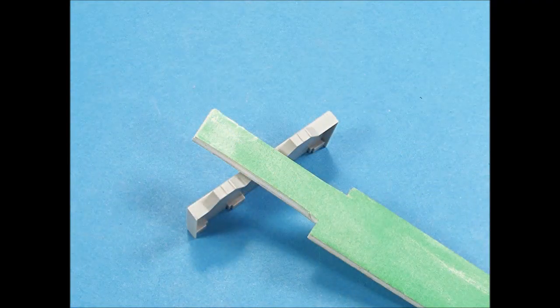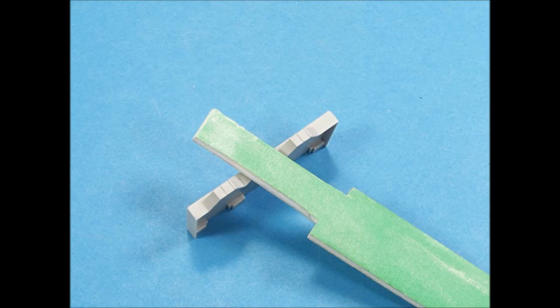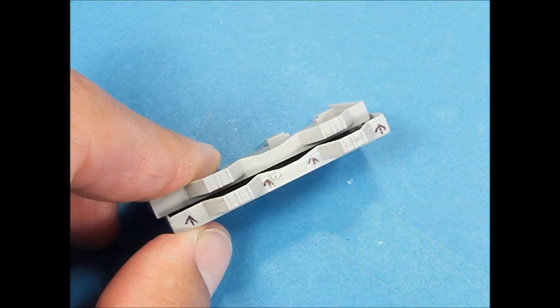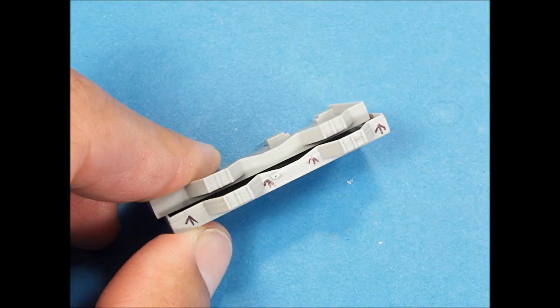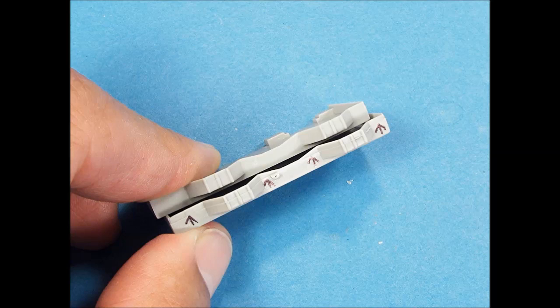To smooth out the surfaces that have raised detail, you can modify a sanding stick to get into the areas between the raised detail. The tree connection points on this part are thick and the mold line runs across the middle surface of the part. Careful scraping, cutting, shaping, and sanding restored the surface of the part.